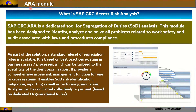Let's look at the first module: ARA, or Access Risk Analysis. Access Risk Analysis is a dedicated tool for segregation of duties analysis. This module is designed to identify, analyze, and solve all problems related to work safety and audit compliance with laws and procedures. A standard rule set of segregation rules is available, based on best practices in business areas and processes. It can be tailored to the specifics of the client organization and provides comprehensive access risk management for one or cross-system environments.